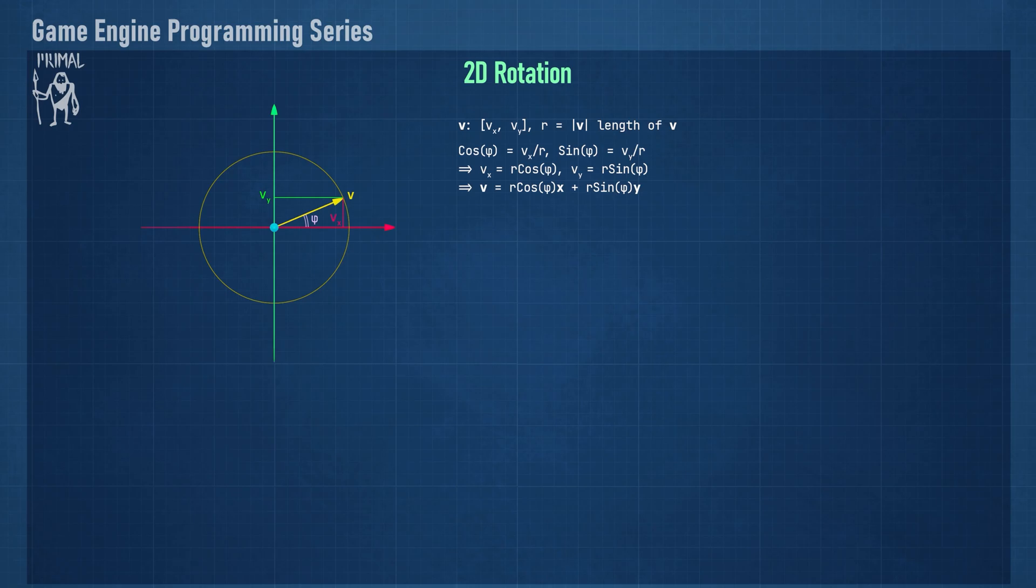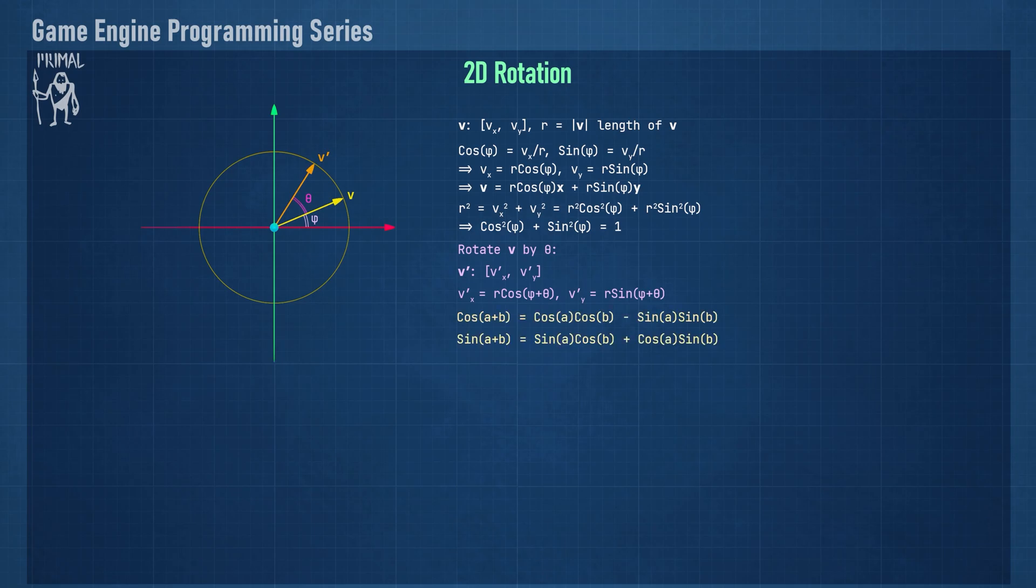It's also easy to show that the squares of cosine and sine of phi add up to 1. Now let's try rotating v by an angle theta which transforms v to a new vector v prime. The angle between v prime and the x-axis is the sum of phi and theta, which we can use to get the x and y components of v prime. Using these trigonometric identities, we can split the terms as functions of phi and theta like this.